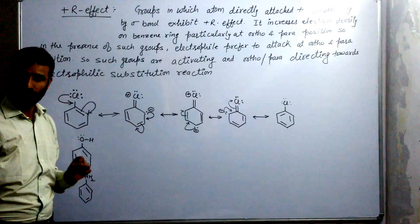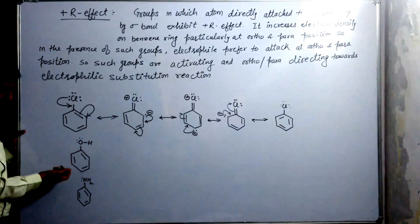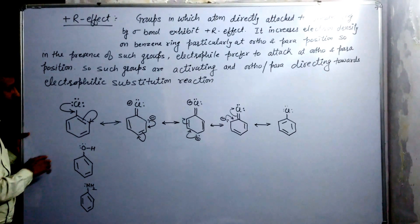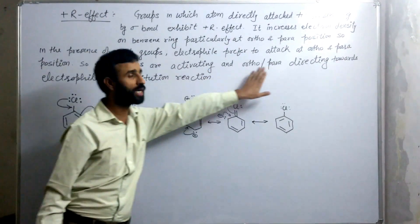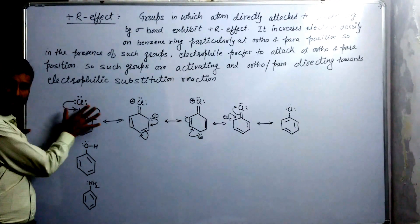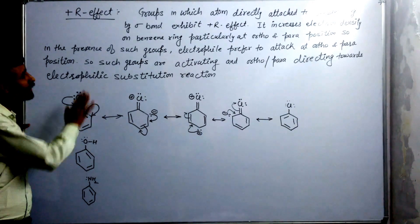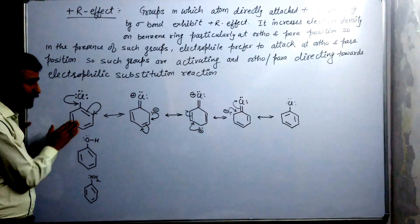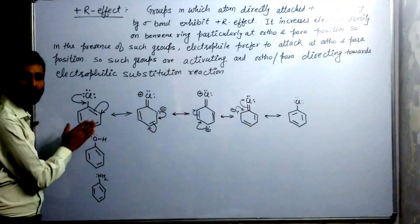So chlorine is an ortho-para directing group, because the electrophile will prefer to attack these positions. The same applies in the case of phenol and aniline. Such groups are activating and ortho-para directing. But halogens are an exception to the rule. In halogens, the minus I effect dominates and decides their reactivity, so they are deactivating. They are deactivating as well as ortho-para directing. Halogens are a special case where the minus I effect makes them deactivating, but they remain ortho-para directing. Thank you.